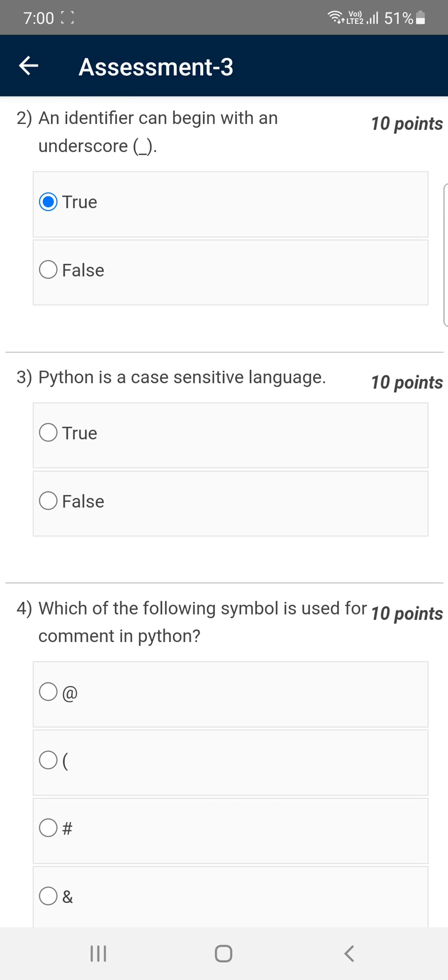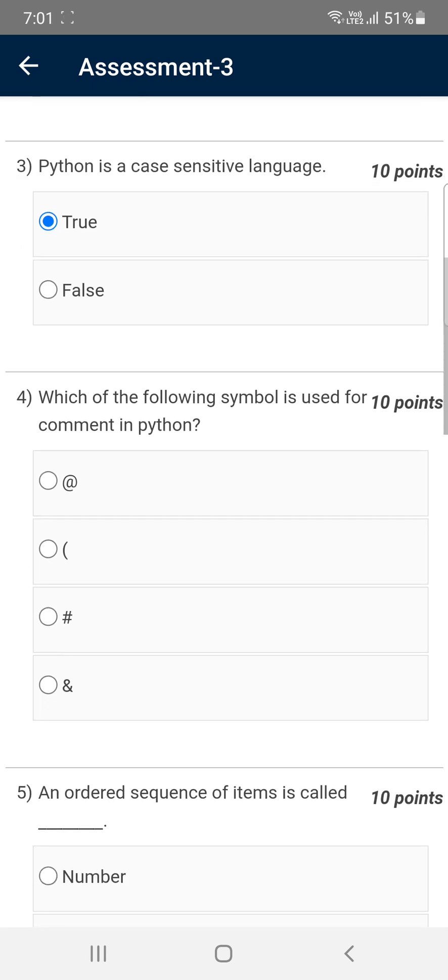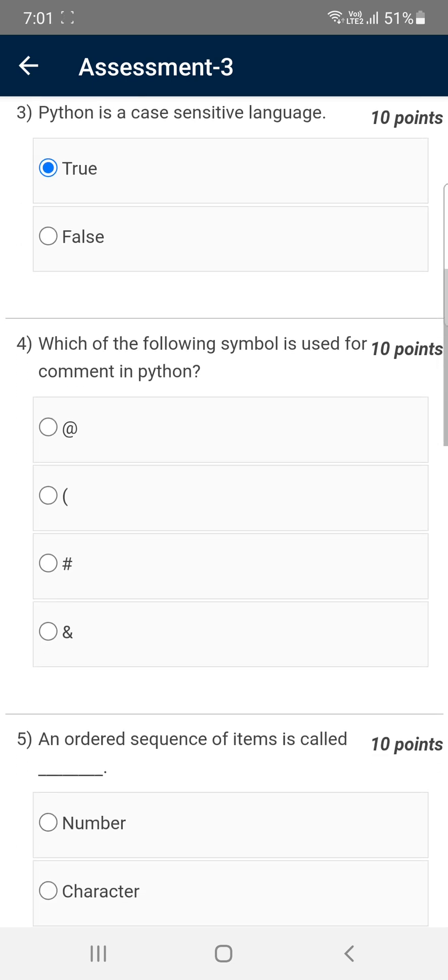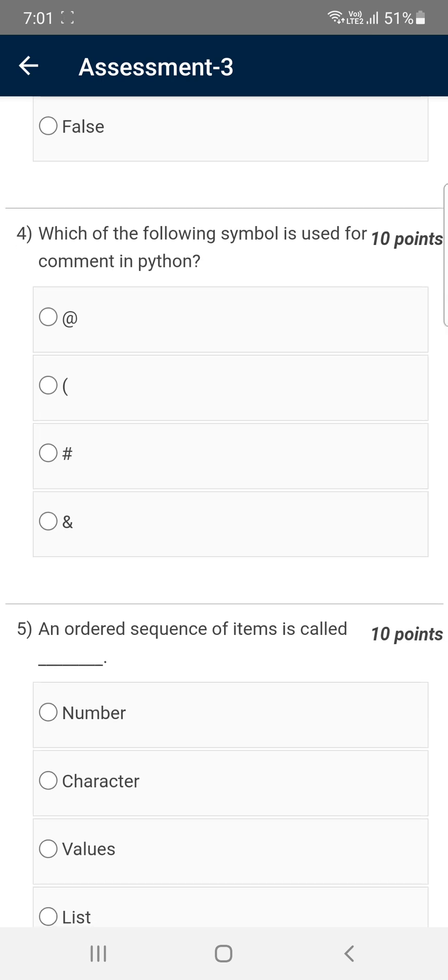Moving on to the third question: Python is a case sensitive language, so it is again true. Moving on to fourth question: which of the following symbol is used for comment in Python? We already know that it is hash. Hash symbol we use for comment in Python. If you want to type a comment, first we have to use hashtag and we should type any comment we want to do.